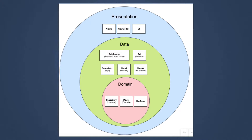In each layer we put some classes. For example, in the domain layer we put the use cases, the model classes which are data classes, and the repository interfaces. In the data layer we put everything that represents our data — for example, repository implementations, DataStore Preferences, databases, networking, and any other data managers. The presentation layer is where we define our UI — everything related to the UI, for example the views or composables, the view models, and the UI events.